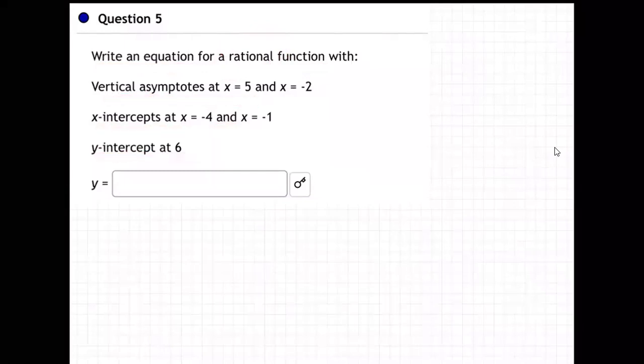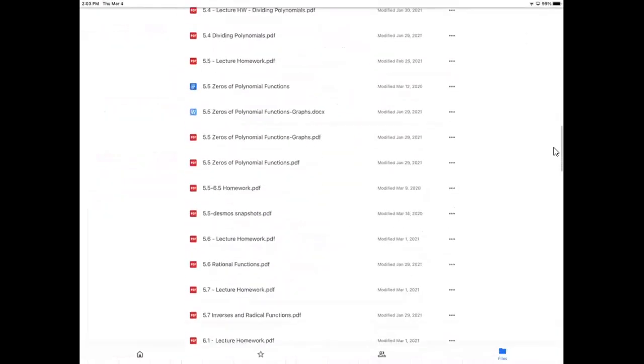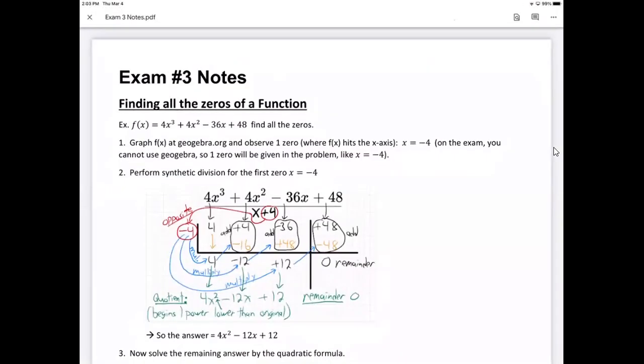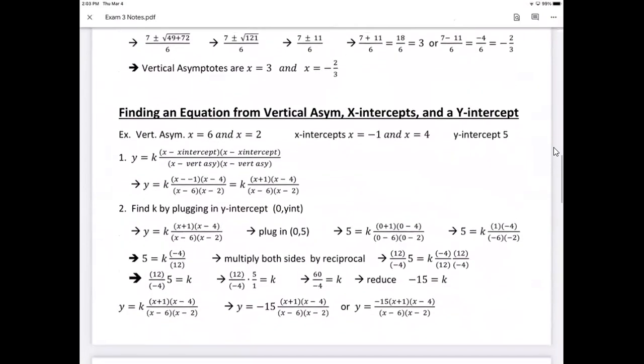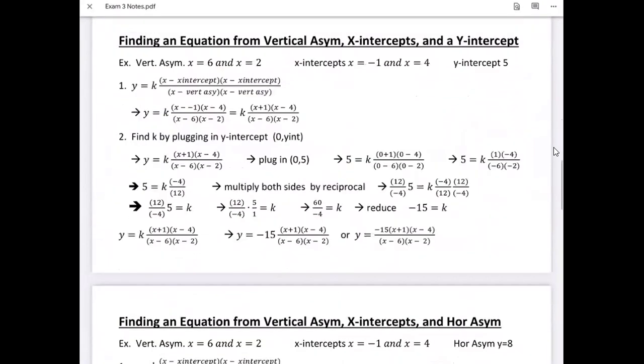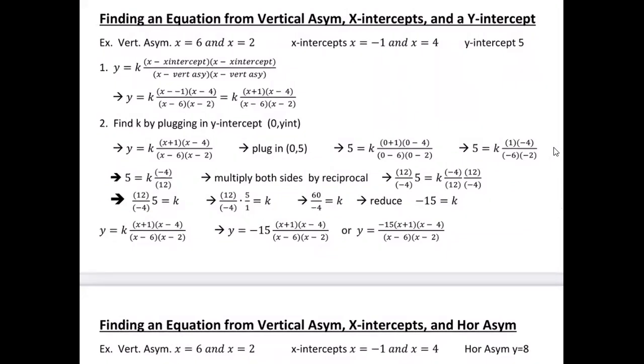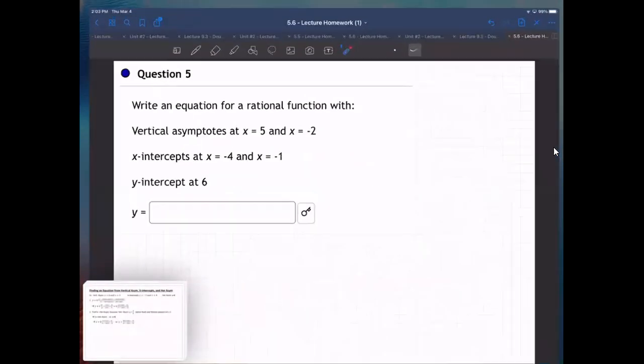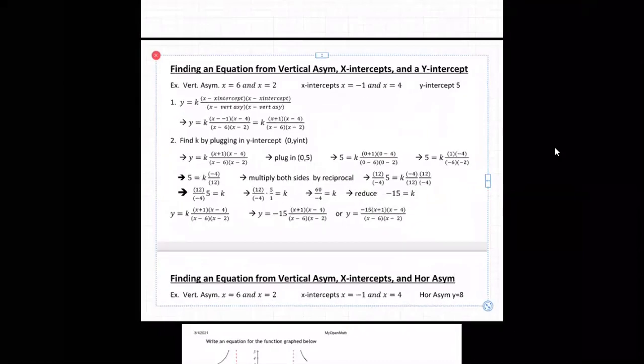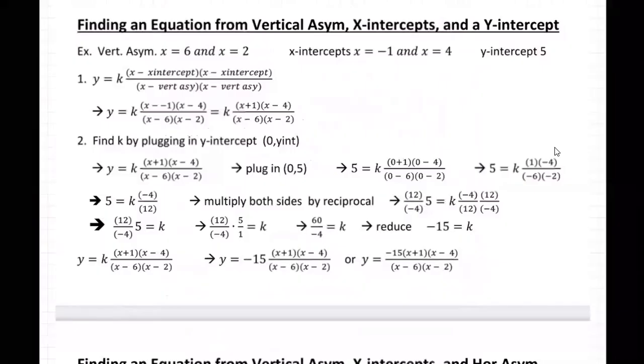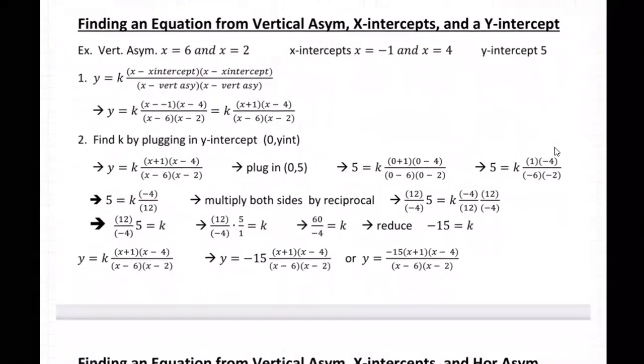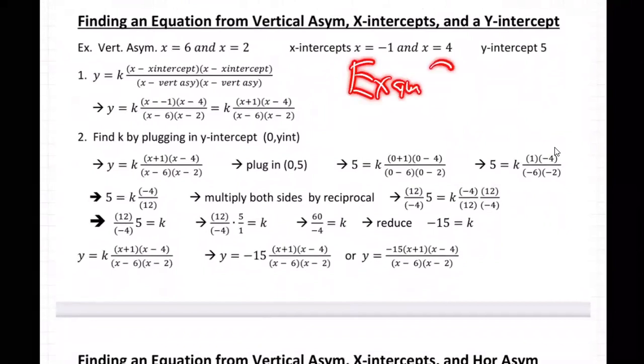Let me grab the notes for you, and I'll show you where this is on the exam three notes. So on the exam three notes, which I put at the top of the unit three module, here it is, right here, finding an equation from vertical asymptotes, x-intercepts, and y-intercepts. That's what we need. Here we go. All right, so let me pop it in here for us. Here it is.